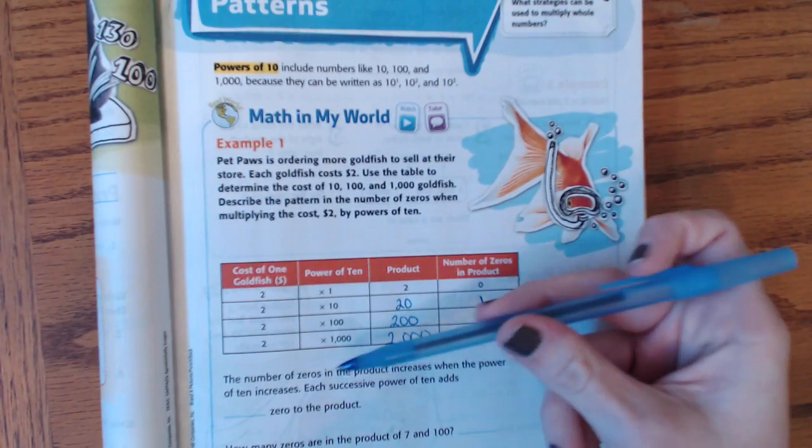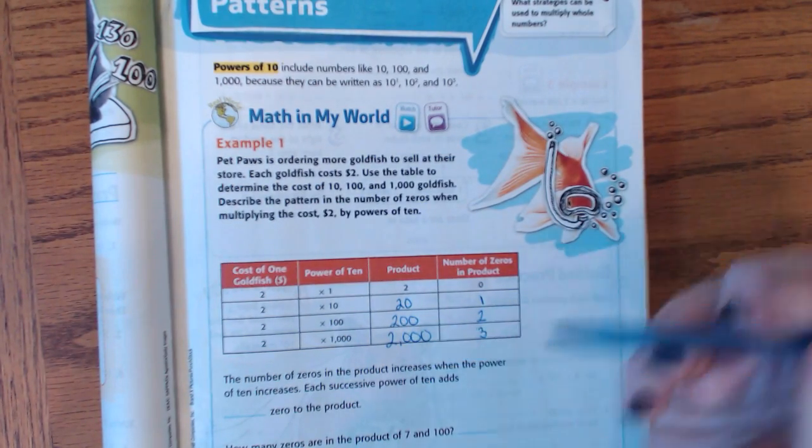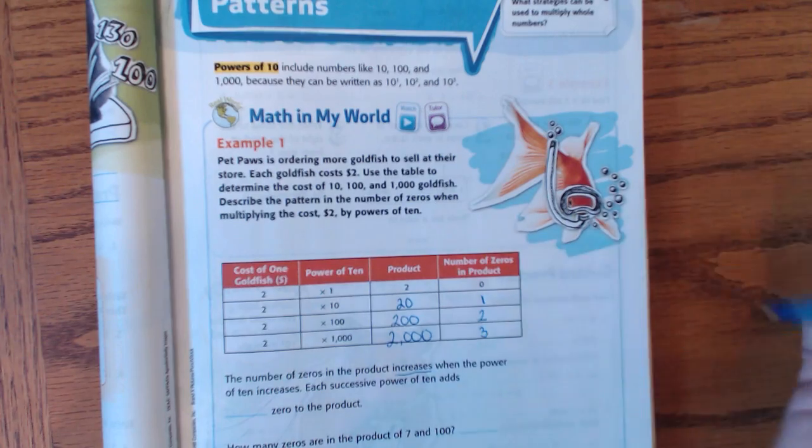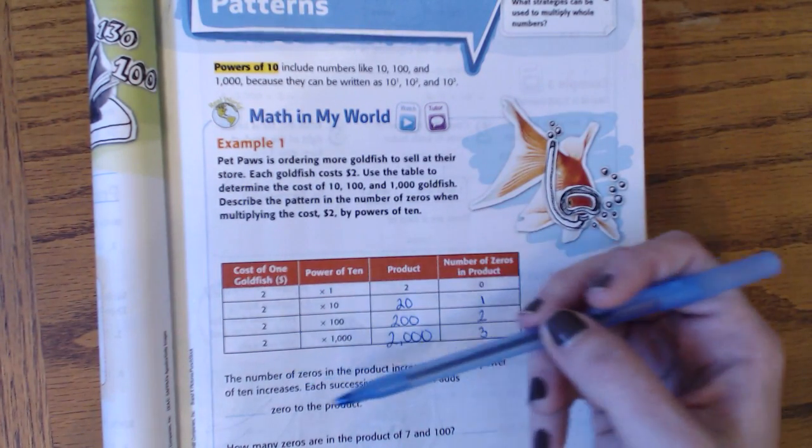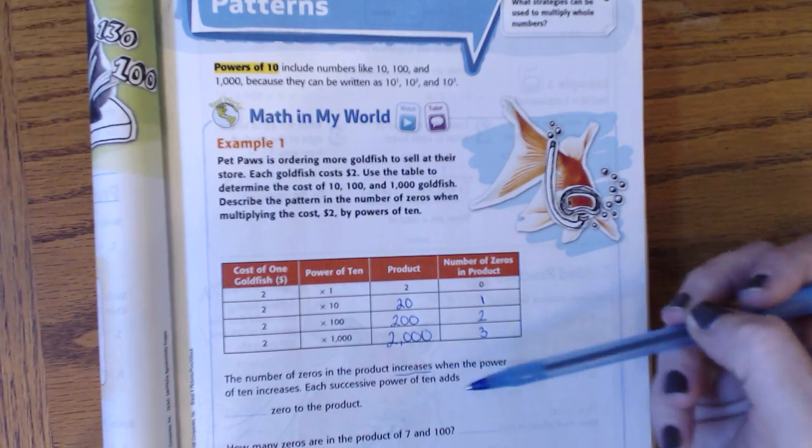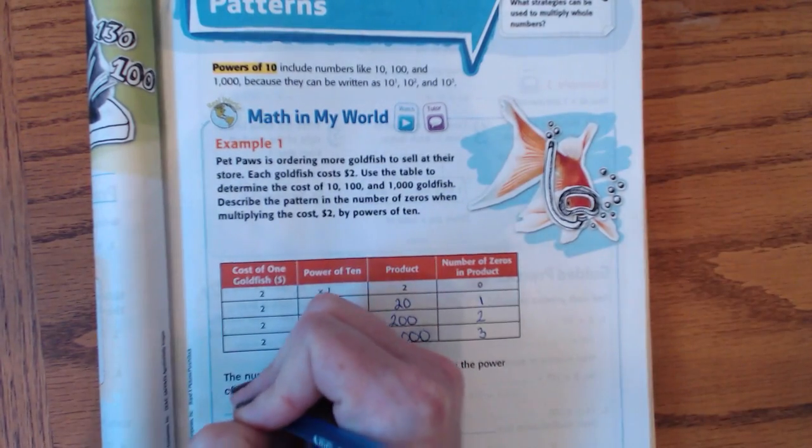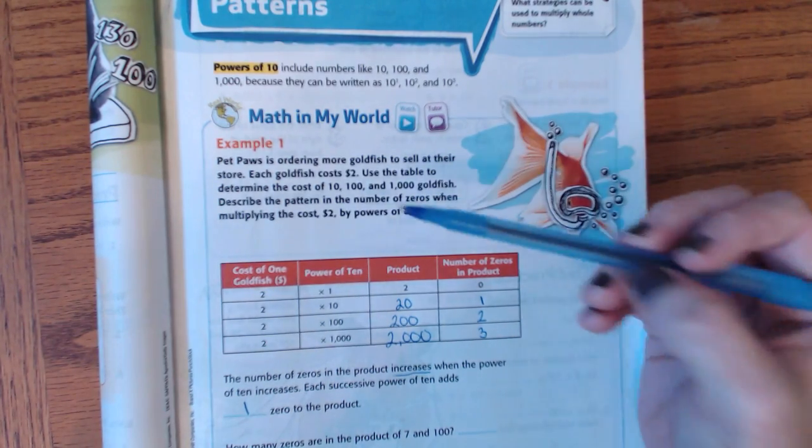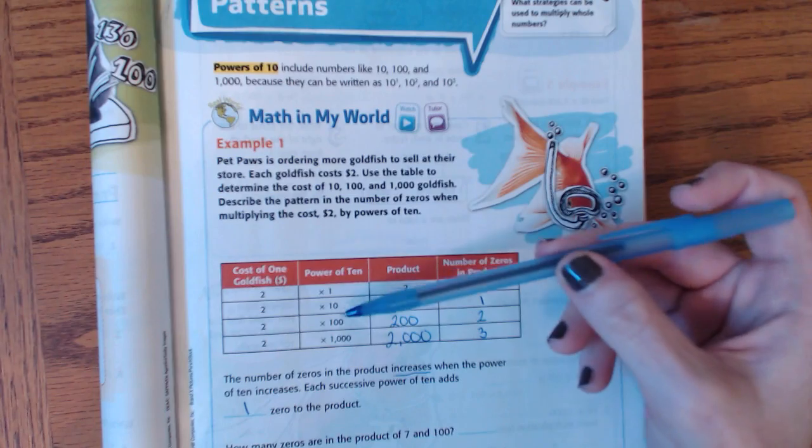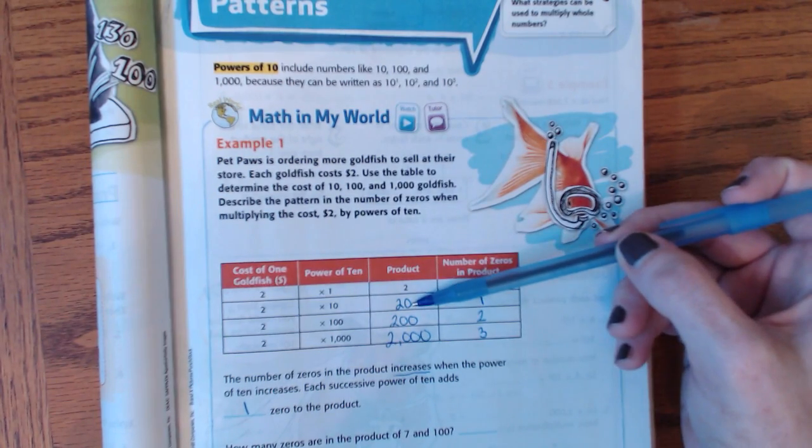So the number of zeros in the product increases or gets bigger when the power of 10 increases. Each successive power of 10 adds one zero to the product. So basically, every time you see a zero here, you just put the zero there, okay?